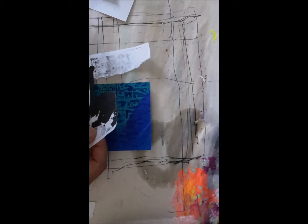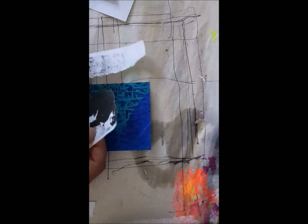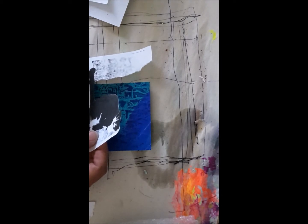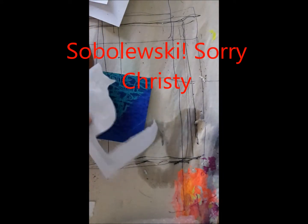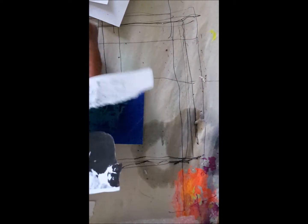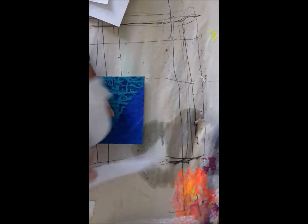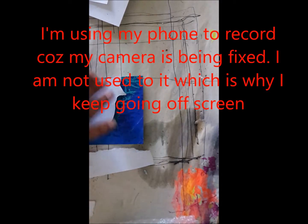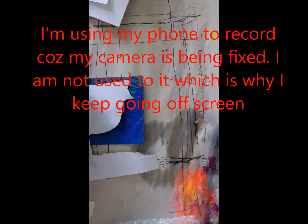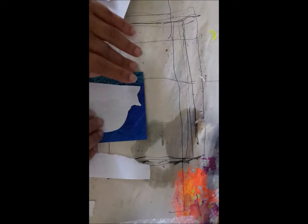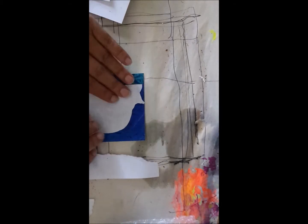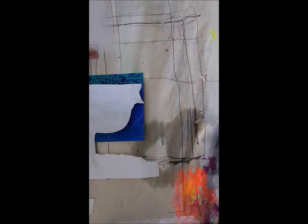I watched a video by Kristi Solobowski—sorry if I massacred your name—and what she did for a journal page was she printed a cat, covered it with paper, and then cut across it. I started cutting then remembered that I'm supposed to cut later.